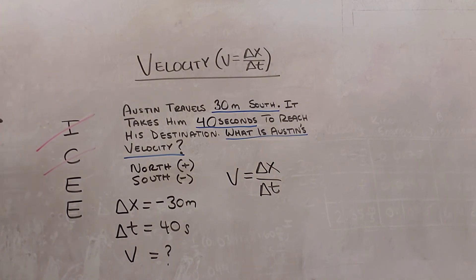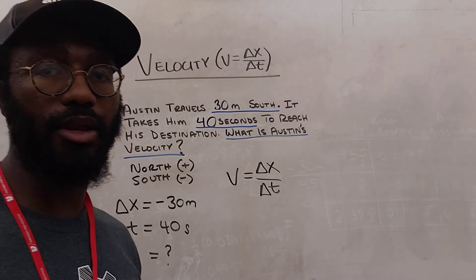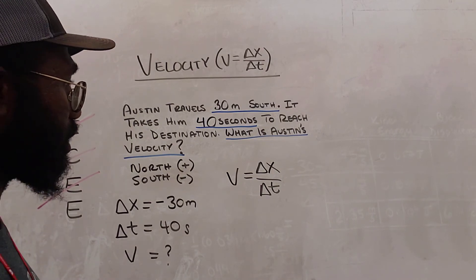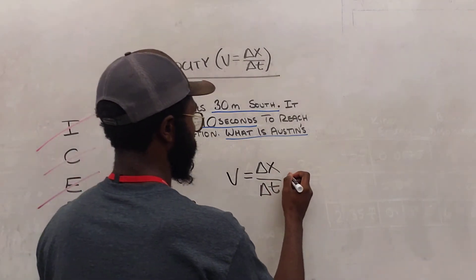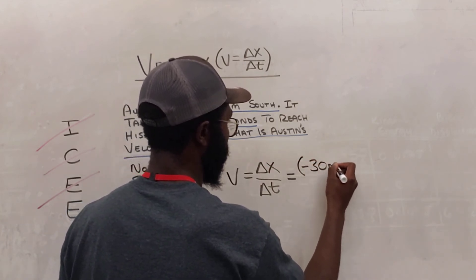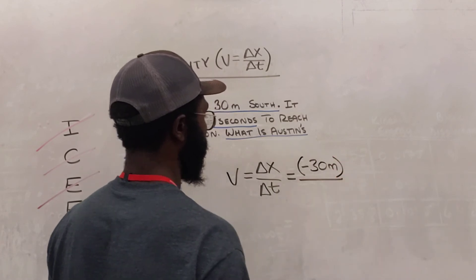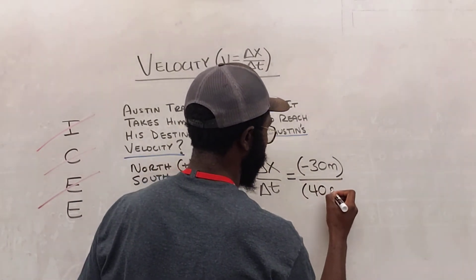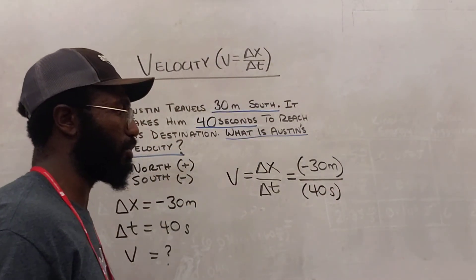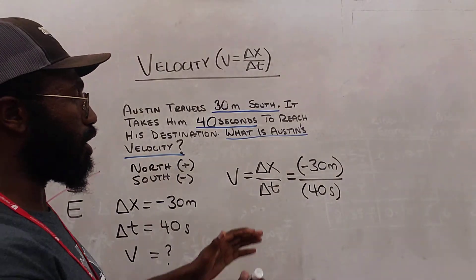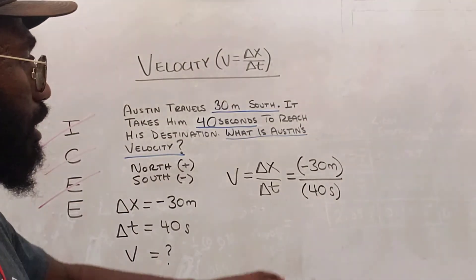Now we are done with our equate step and we can move on to evaluate. Now when we evaluate, we're simply plugging in our numbers in order to solve the problem. So we're plugging in those measurements. So we're going to equate or evaluate this. So delta X, we said was equal to negative 30 meters. And delta T is equal to 40 seconds. Now notice I put parentheses around my measurements when I plug them in. I think it's just a good habit to practice so that you don't lose track of which measurement you're working with.